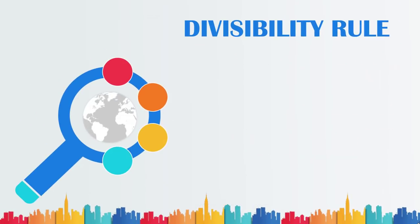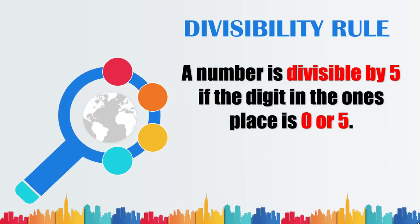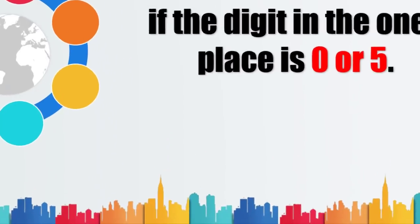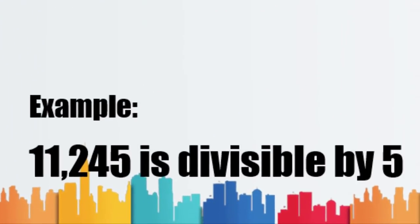A number is divisible by 5 if the digit in the 1's place is 0 or 5. Example: 11,245 is divisible by 5, since the 1's place of the number is 5.